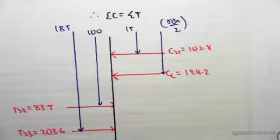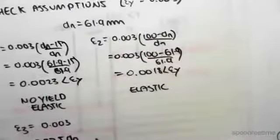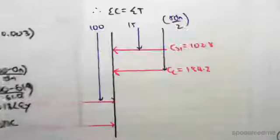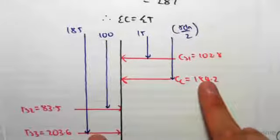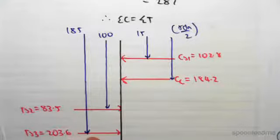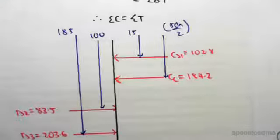The only really complicated one is the compression in the concrete, which we found to be 184.2 kilonewtons. Now that acts at a distance, which is halfway at its rectangular stress box. We've seen this in the previous video lots of times.